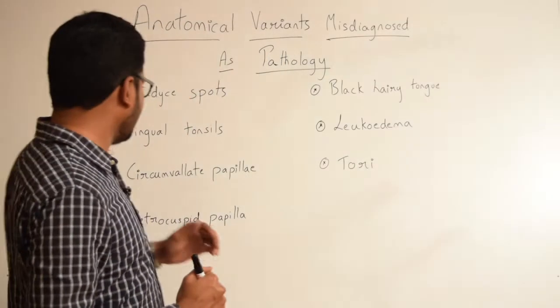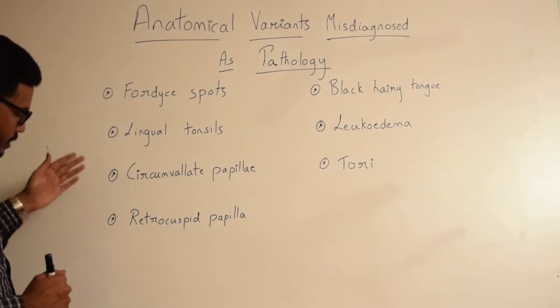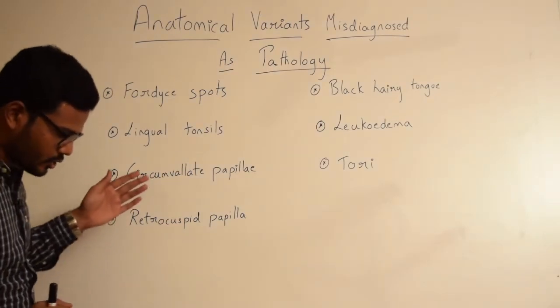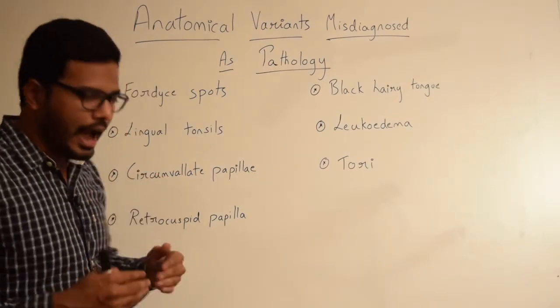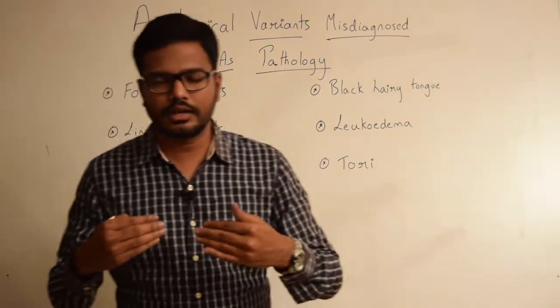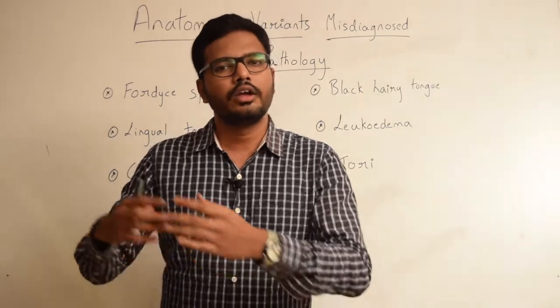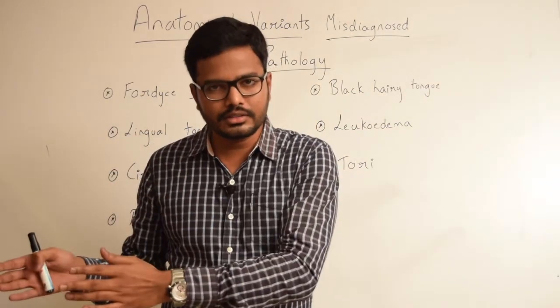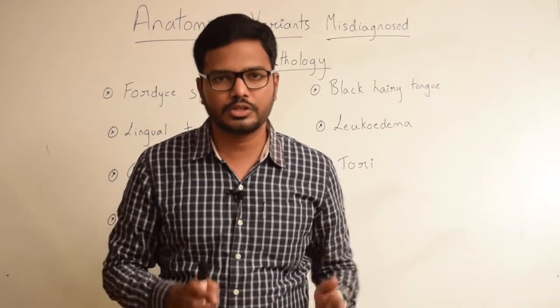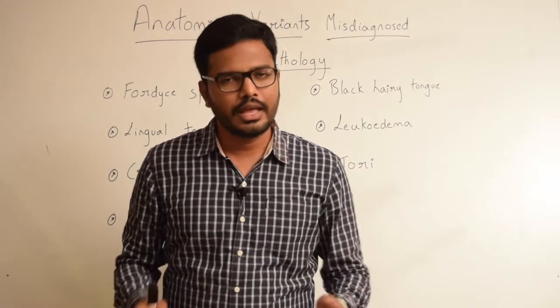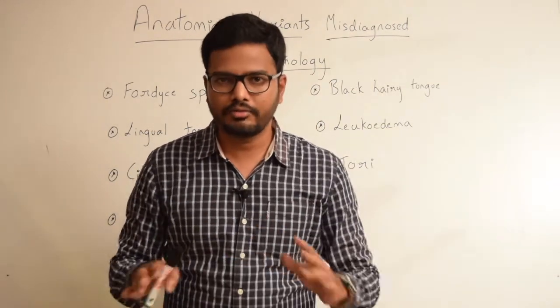Then we have circumvallate papilla, usually present on the tongue anterior to the sulcus terminalis, which divides the tongue into the anterior two-thirds and the posterior one-third. These are again normal findings.